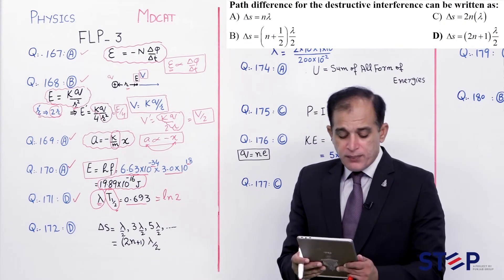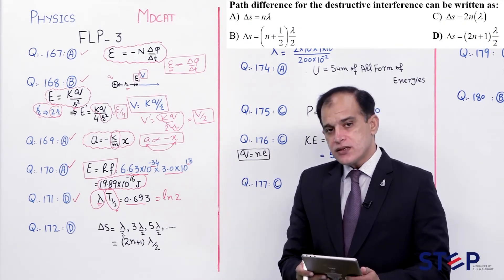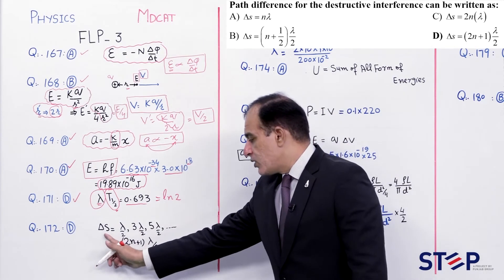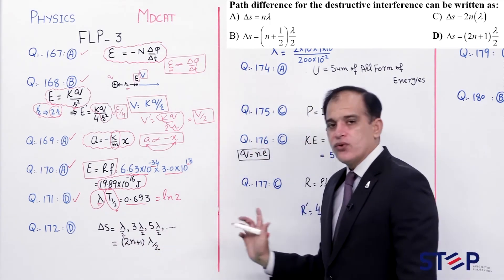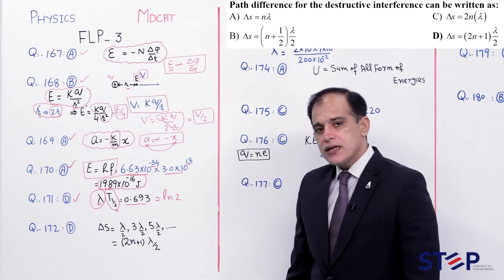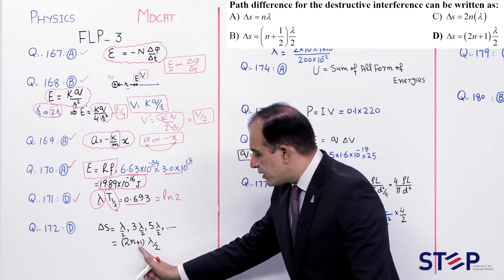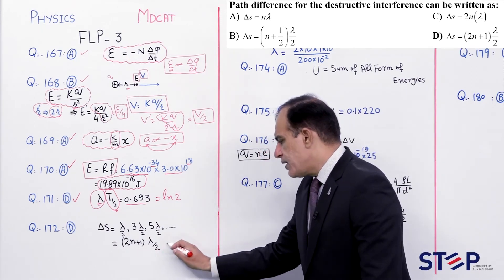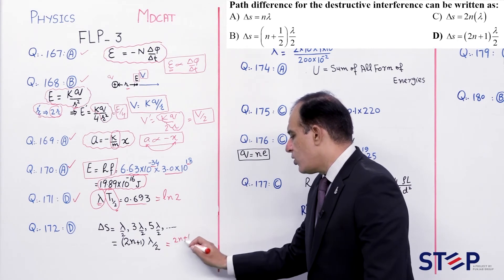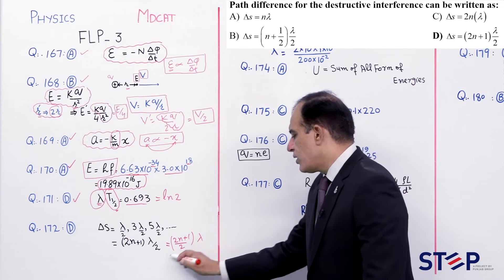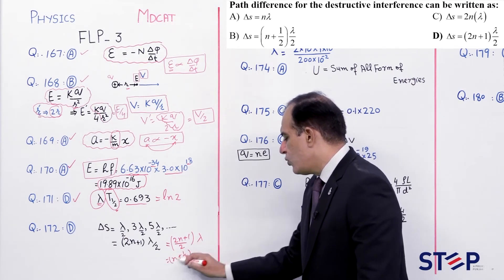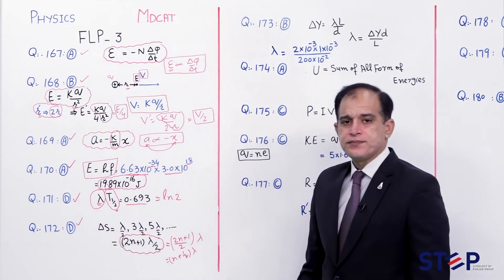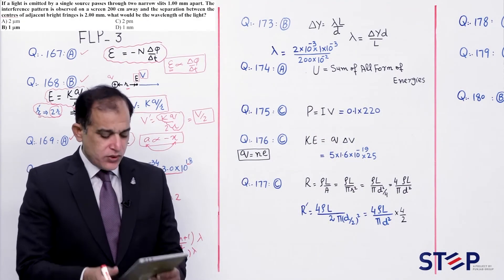Question number 172: Path difference for destructive interference. Destructive interference ke liye path difference: λ/2, 3λ/2, 5λ/2 (odd integral multiples of λ/2). General form: (2N+1) × λ/2, jo N + ½ × λ bhi likha ja sakta hai. Correct option is the formula N + ½ multiplied by λ.